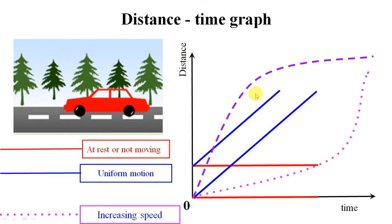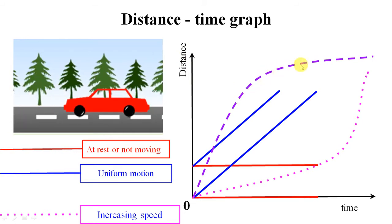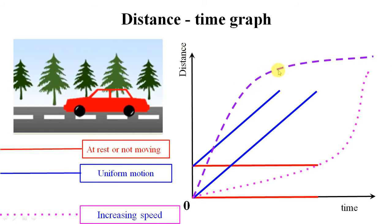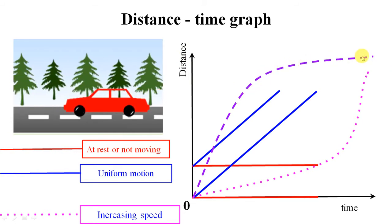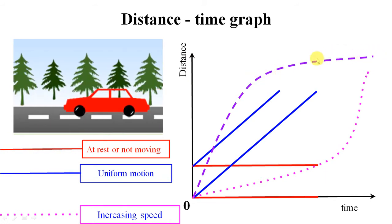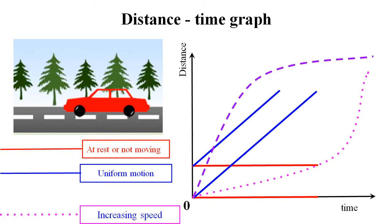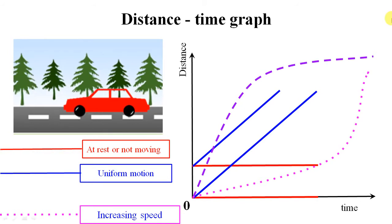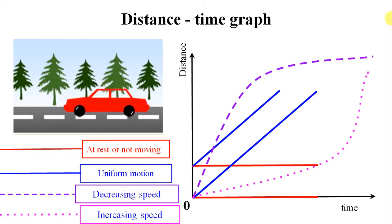The car did not cover much distance but took a lot of time, and the distance covered is decreasing. Hence we can say that the body is decreasing its speed — so the fourth case is a decreasing speed case.